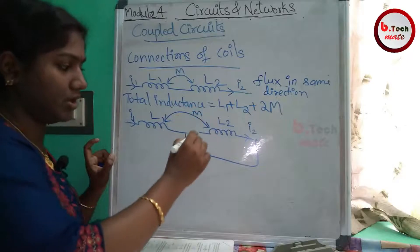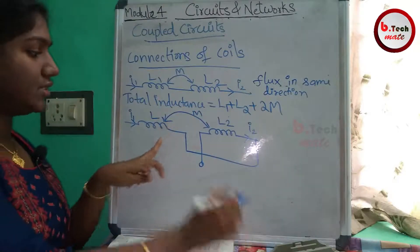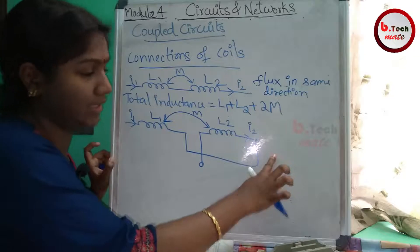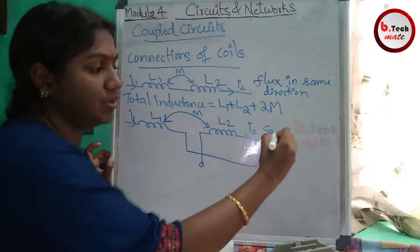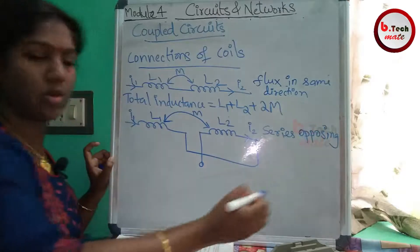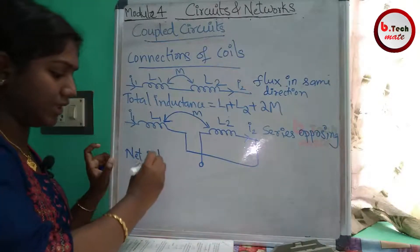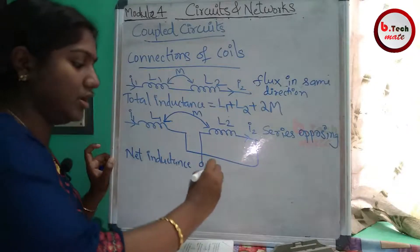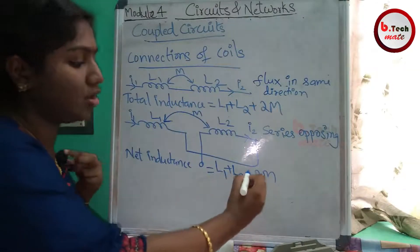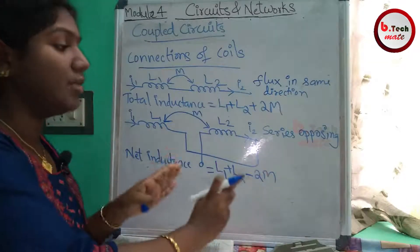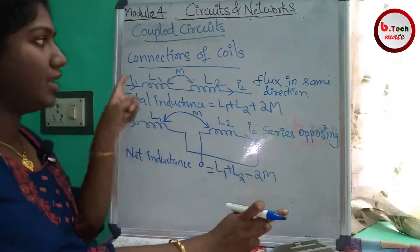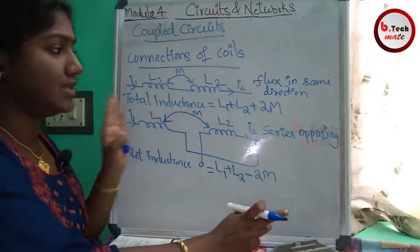Here, the mutual inductances M are for two coils. The first coil is oriented in one direction and the second coil is oriented in the opposite direction — this is the series opposing connection. The flux linkage goes in the opposite direction. In that condition, the net inductance is equal to L1 plus L2 minus 2M.